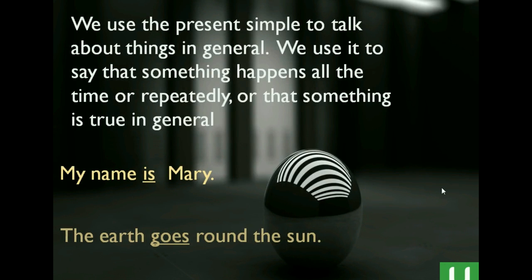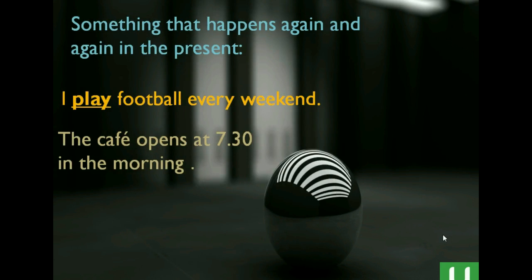We use the present simple to talk about things in general — like your name, what do you like, why don't you like, and so on. We use it to say that something happens all the time, like a fact — the earth goes around the sun — or repeatedly, like you go to school every day, or something that is true in general, like my name is Mary. The earth goes around the sun — something that happens again and again in the present.